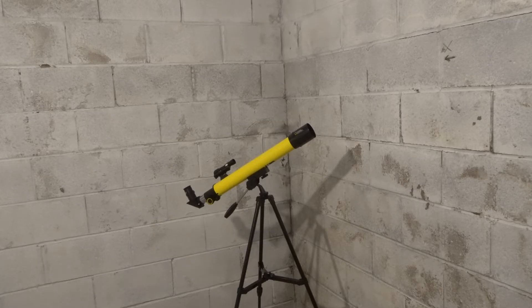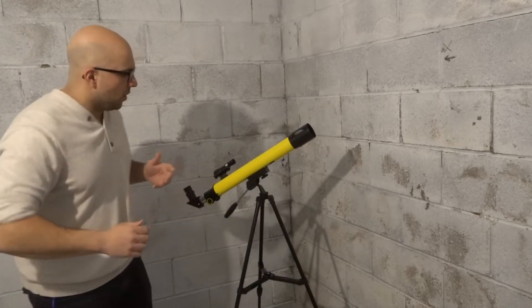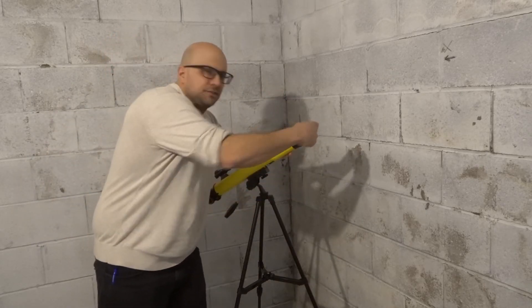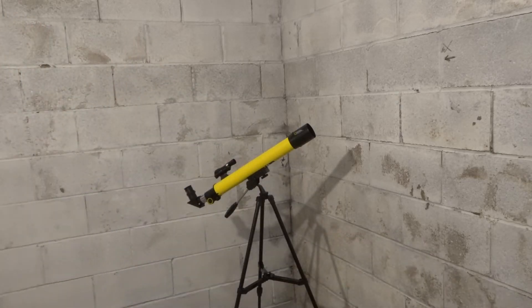Number two is to make sure that the objective lens is also clean. The objective lens is this lens over here, you want to make sure that this lens is clean. That's for the same reason I just outlined before. If it's smudged, it will look blurry and it will look unfocused. So make sure that the objective lens is clean too.